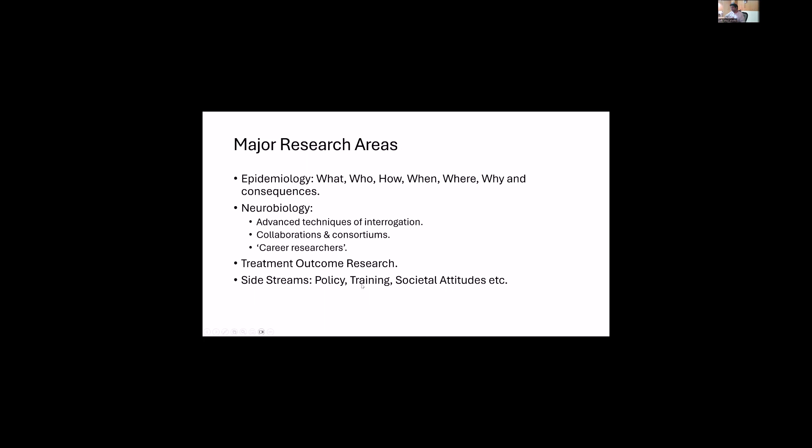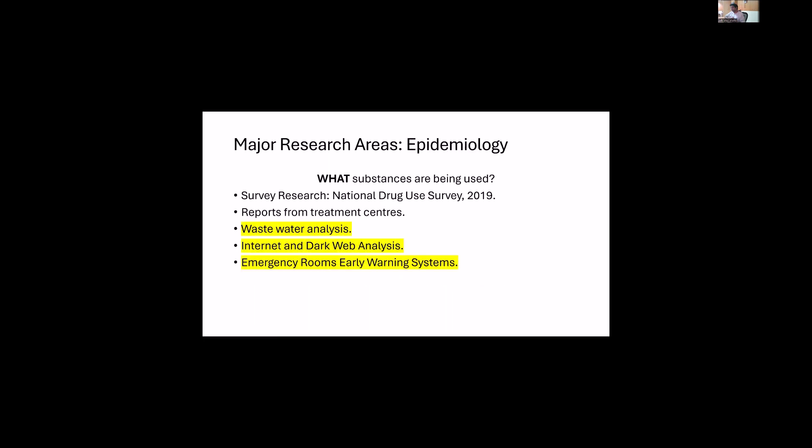These side streams are actually the easiest and therefore most often used, so do go into that arena as well. Looking at major research areas in epidemiology: what substances are being used is itself a large area of research. It could be a very big survey, like the national drug use survey of 2019, but such survey research requires a lot of resources and coordination, or it could be smaller reports from treatment centers.